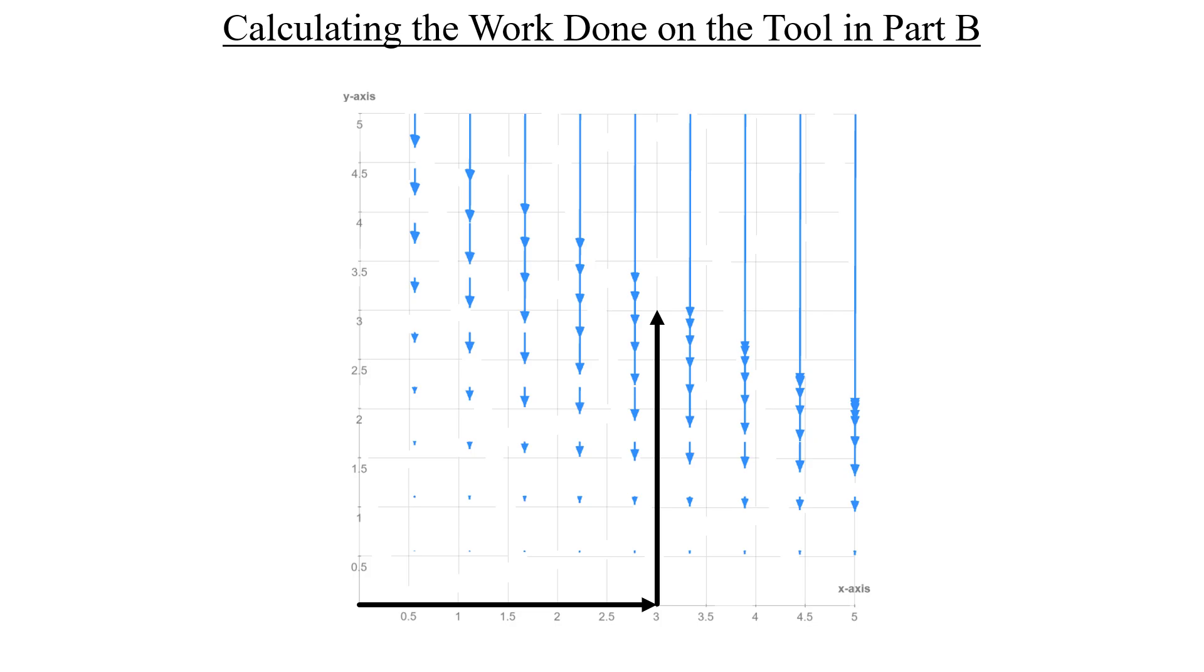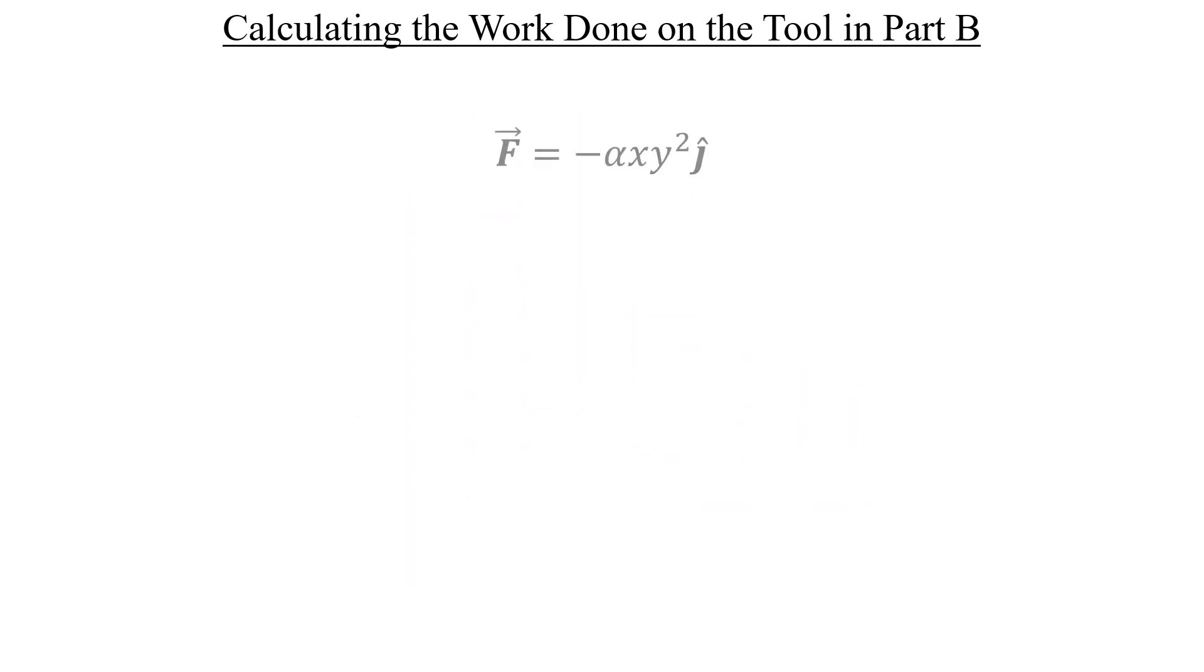Let's start with the work done along the X direction. Here's our field again. And notice that as we increase X, we're keeping Y at 0. And anything multiplied by 0 is still 0. So that means the work done in the X direction is going to look like this, which will integrate to just 0.